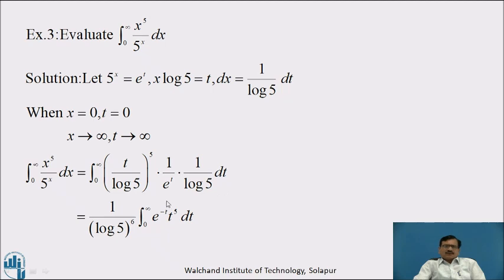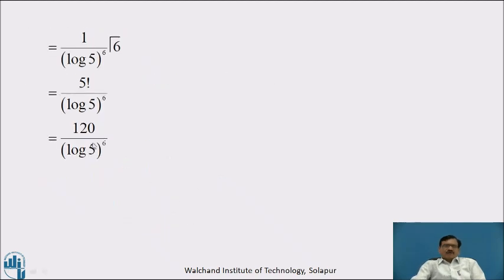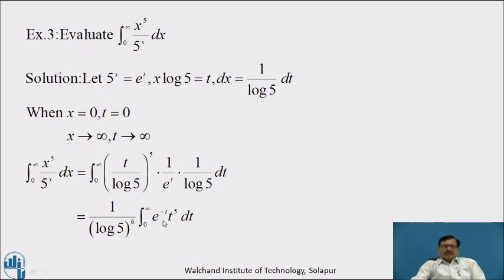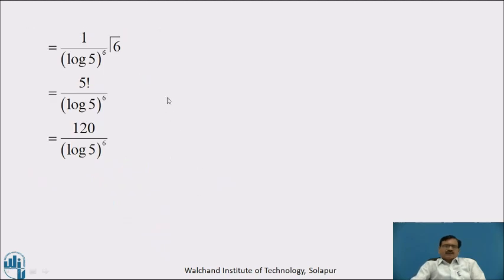Taking the constant terms outside — 1 by log 5 raised to 5 and 1 by log 5 — which equals 1 by log 5 raised to 6, into integration from 0 to infinity of e raised to minus t into t raised to 5 dt, which equals 1 by log 5 raised to 6 into Gamma of 6. Because here n minus 1 is 5, therefore n is 6, so we write Gamma of 6.